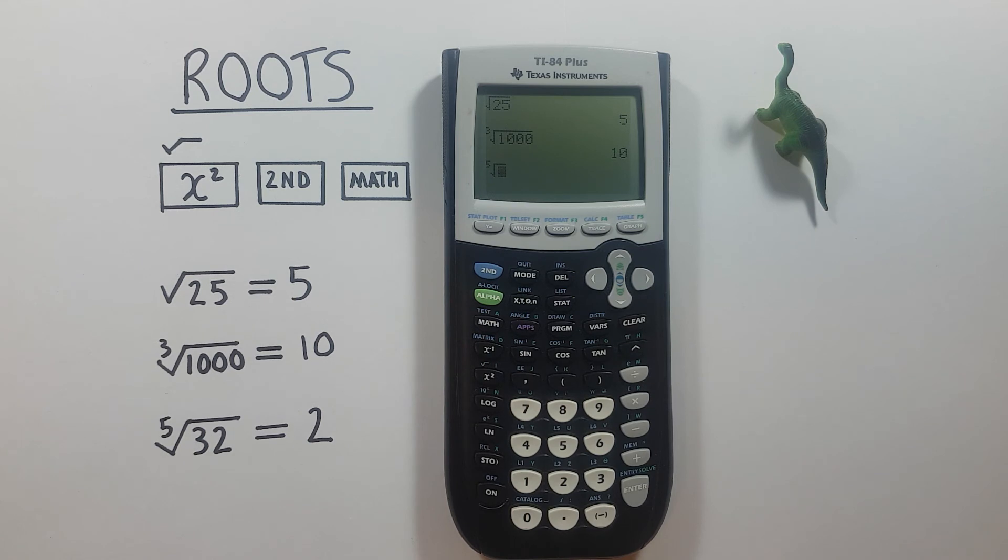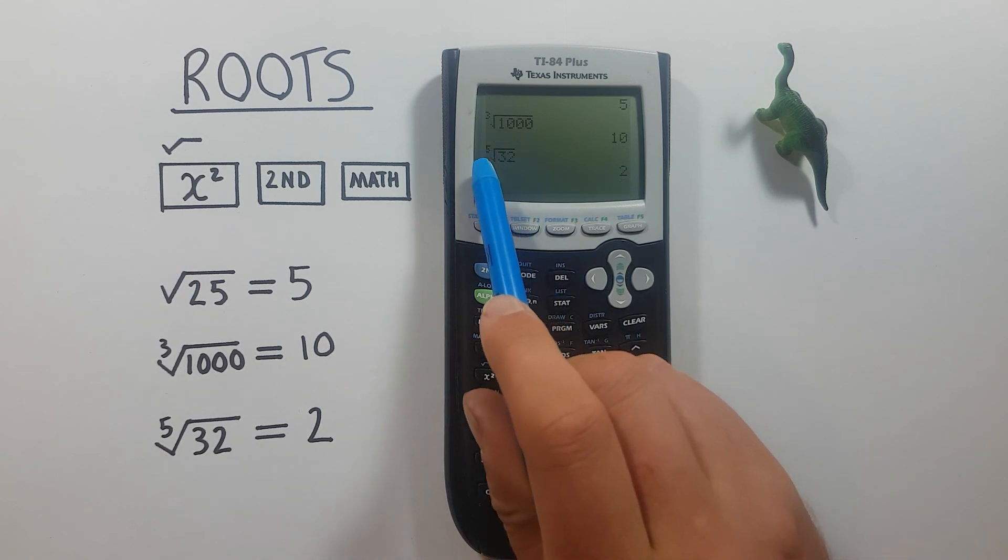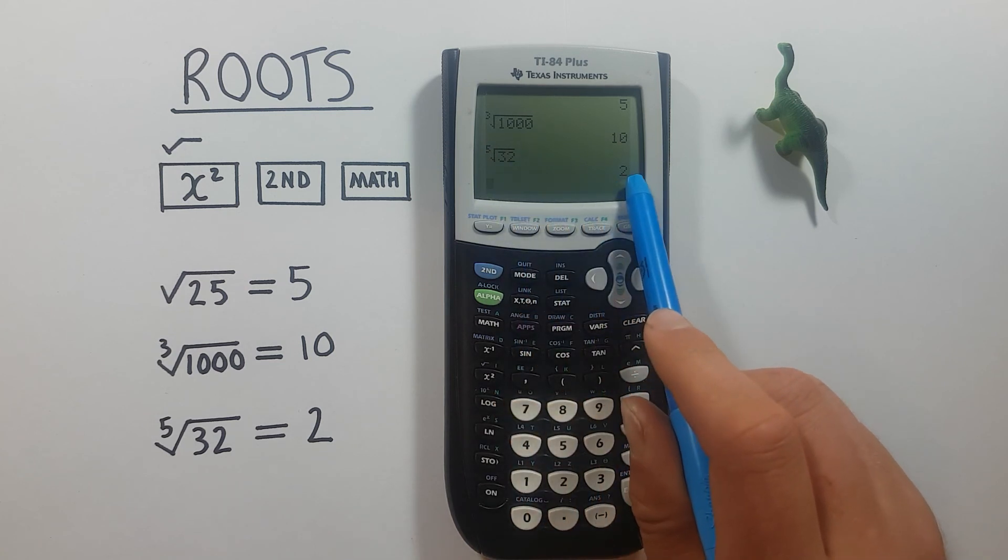There we go. And again, we can just enter the number we're trying to solve for in there. So in this case that was 32 and press enter. And we see that the fifth root of 32 is equal to 2.